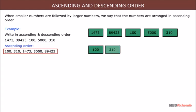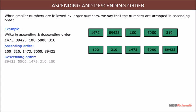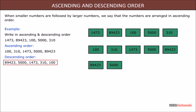Solution: Ascending order: 100, 310, 1473, 5000, 89423. And descending order: 89423, 5000, 1473, 310, 100.